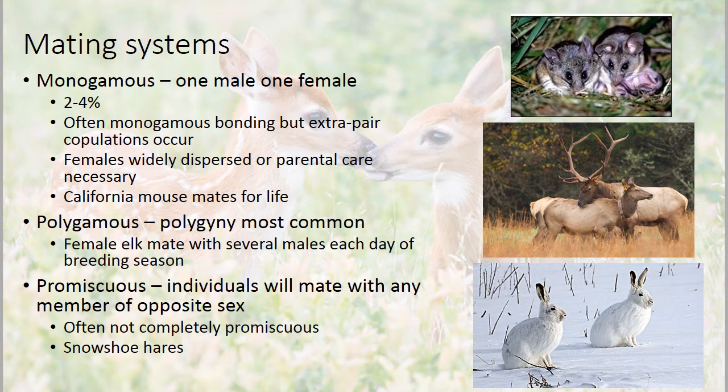Most mammals are polygamous, and within that, polygyny is most common — one male and multiple females — but that's not always the case. Sometimes females will mate with multiple males, like female elk, which mate with several males every single day of the breeding season. Some mammals are considered promiscuous, mating with any member of the opposite sex they come across, though research shows that even in those populations there's some degree of mate competition. An example is snowshoe hares.